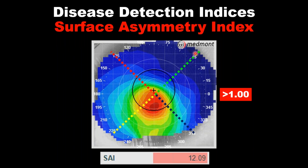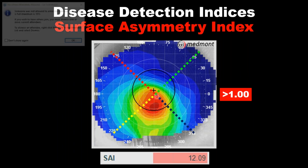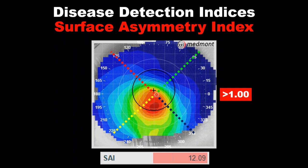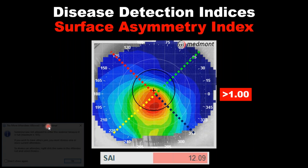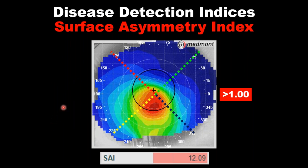The second disease detection index is called the Surface Asymmetry Index, and it looks at how symmetric one hemisphere is from the other in each of the oblique meridians. Otro índice extremadamente importante: el índice de asimetría de la superficie. Similar al anterior, divide el ojo en dos meridianos, pero utilizando meridianos oblicuos en vez de perpendiculares — a 45 y a 135 grados, como pueden ver.